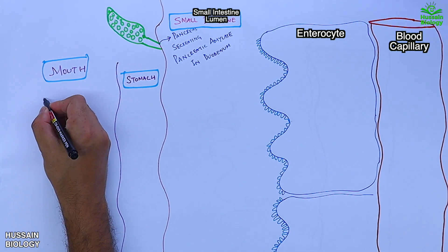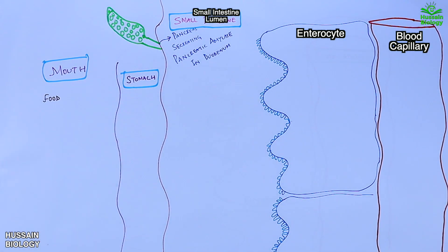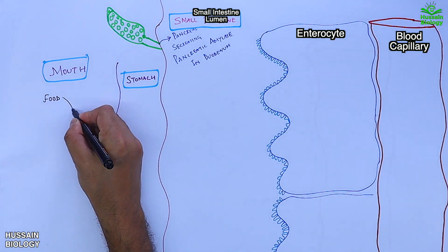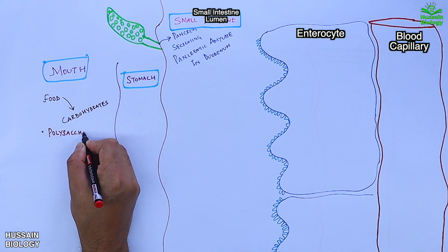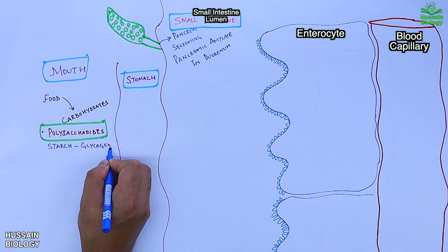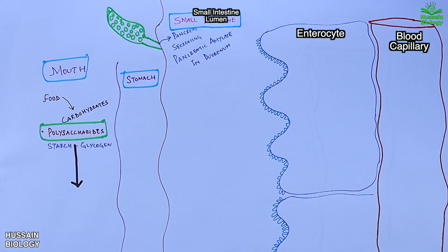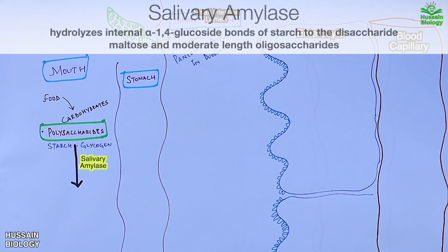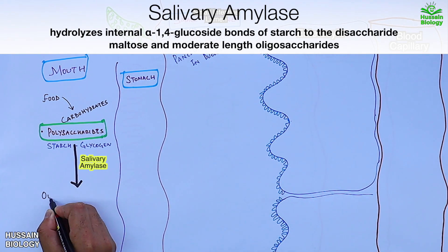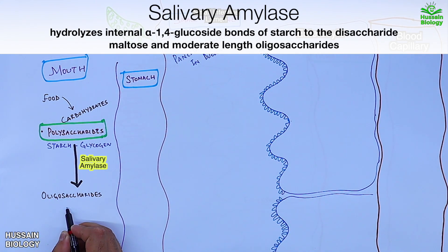First, food reaches the mouth where it is masticated and mixed with salivary amylase. The carbohydrates in polysaccharide form — like starch and glycogen — are acted upon by salivary amylase and get converted into oligosaccharides and maltose.